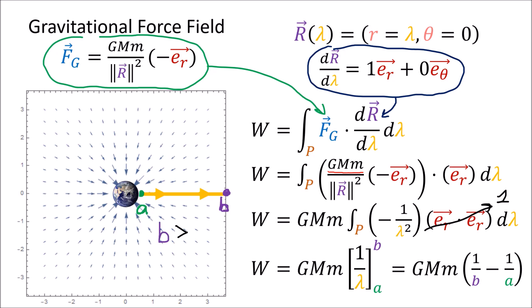Since the path travels outward, the value of b will always be bigger than a. If b is greater than a, then 1/b is less than 1/a, so 1/b minus 1/a is a negative number. That means the work computed will always be negative, which makes sense since this path is traveling against the gravitational field — gravity does negative work on the object. If this path were reversed and we were traveling inward, we'd get the same amount of work but positive instead.